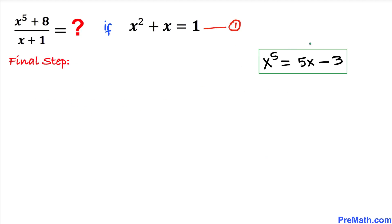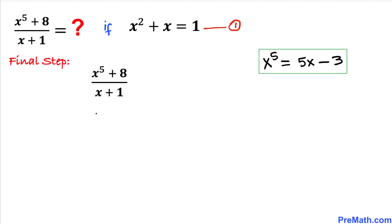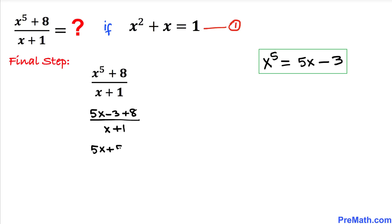For the final step, we've established that x to the power 5 equals 5x minus 3. Now let's focus on the rational expression. I'm going to replace x to the power 5 with 5x minus 3. So the fraction becomes (5x minus 3 plus 8) divided by (x plus 1). Combining like terms on top gives us (5x plus 5) divided by (x plus 1).